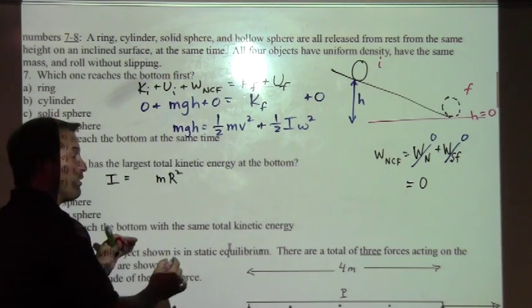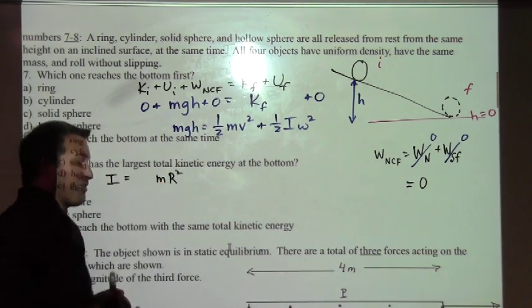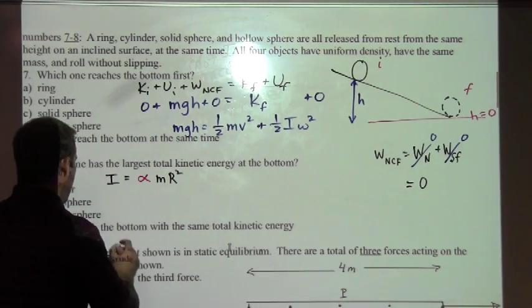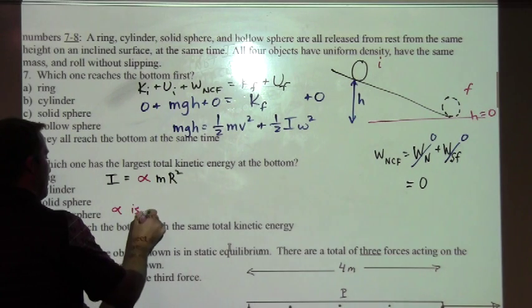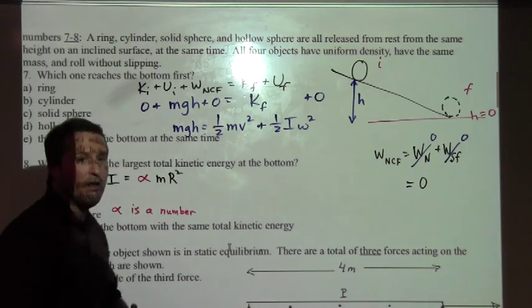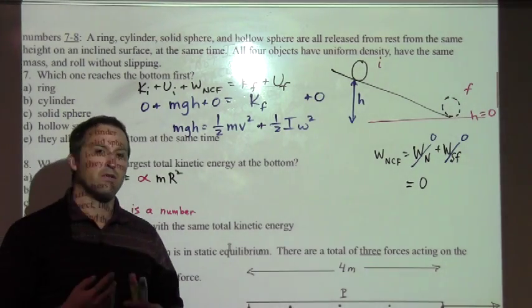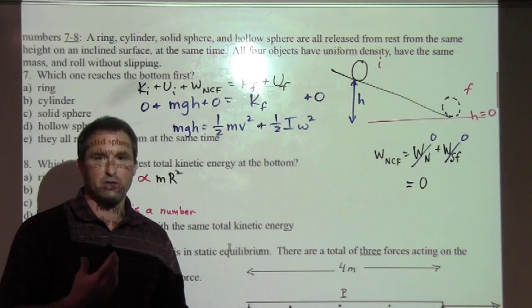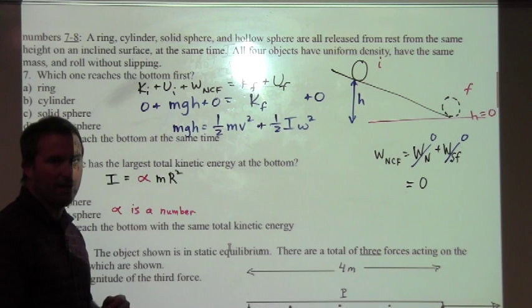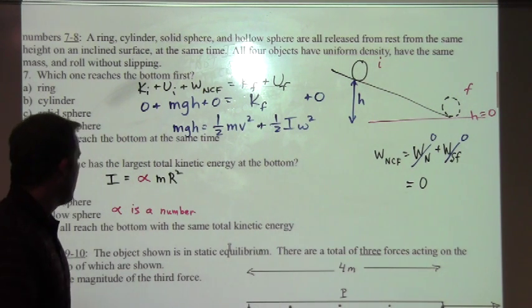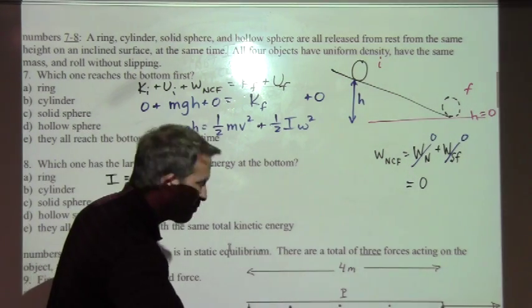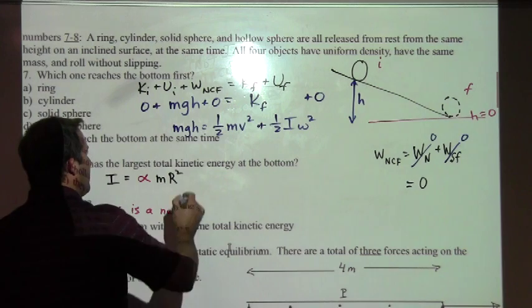What I'm going to do, this is part of the argument, I think this can simplify the problem - I'm going to put alpha here. Alpha is a number. For the ring, alpha is one. For the uniform solid sphere, alpha is one half, et cetera. So each of these objects has their own number right here. That's going to make things a little bit easier for us, because our next step - now that we can rewrite this.